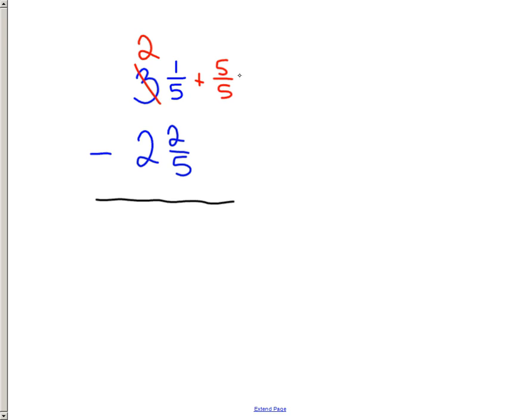And, hey, 1 5th plus 5 5ths is 6 5ths. So, really, we're subtracting 6 5ths minus the 2 5ths. So, I wrote it out over here just so I can see it better. 6 minus 2 is 4. Keep the 5. And, hey, the 2's canceled out.